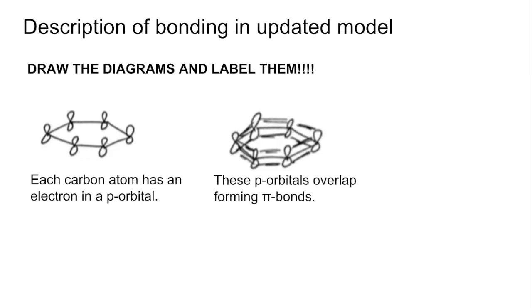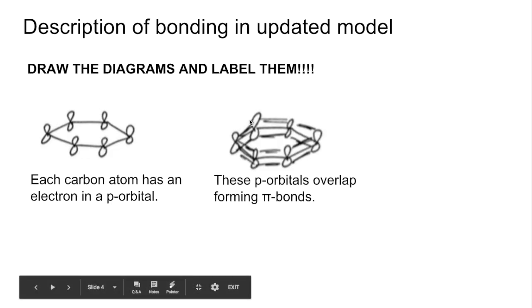And then what happens, the p-orbitals start to overlap, forming pi bonds. So these orbitals expand and start to overlap with each other. So that's what these lines are representing here. Remember that happens above the ring and below the ring.